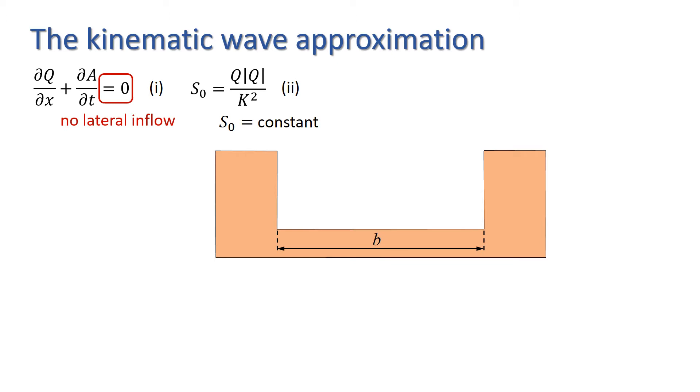First of all, we're going to need to find the conveyance K. Let's define K in terms of Manning's equation, giving us the relationship shown here, where n is Manning's coefficient, A is the cross-sectional area, and R is the hydraulic radius.